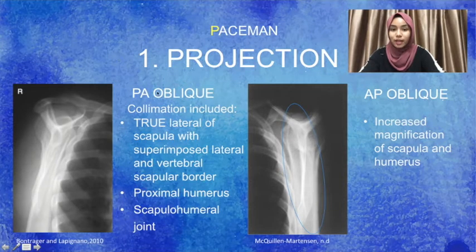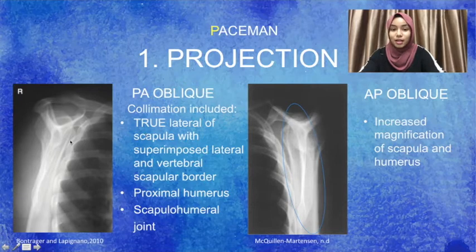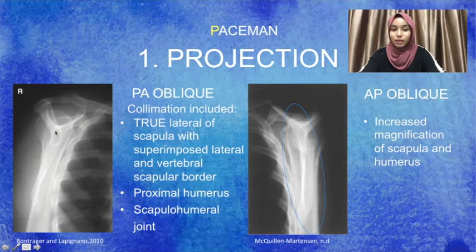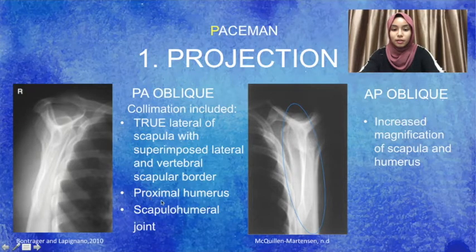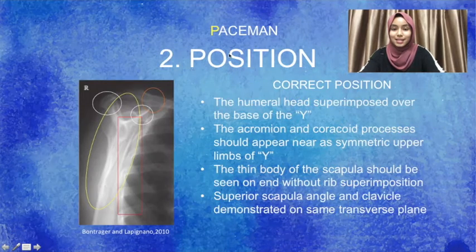Moving next is the projection. The reason why I put the PA oblique picture and AP oblique picture side by side is for easy comparison. For PA oblique, the collimation includes the true lateral scapula with a superimposed lateral and vertebral scapula border. Since the lateral and vertebral scapula border is superimposed and it is in true lateral, the proximal humerus should be included with the scapulohumeral joint. For AP oblique, it increases the magnification of the scapula and the humerus.